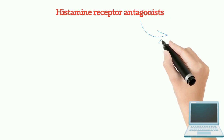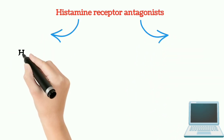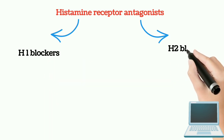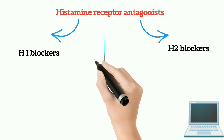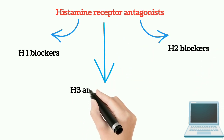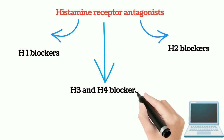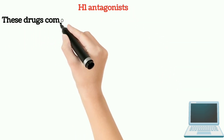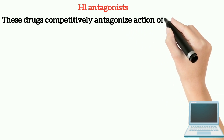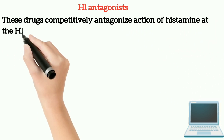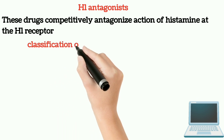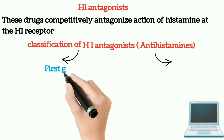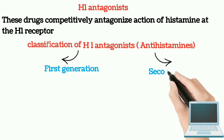Histamine receptor antagonists can be classified into H1 blockers, H2 blockers, and H3 and H4 blockers. H1 antagonists competitively antagonize the action of histamine at the H1 receptor. The classification of H1 antagonists, also called antihistamines, includes 1st generation and 2nd generation.